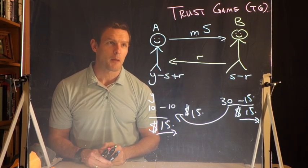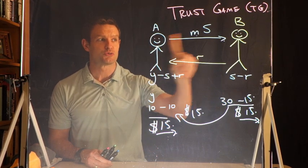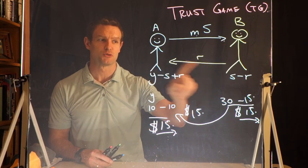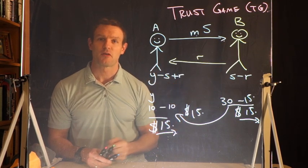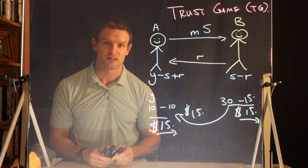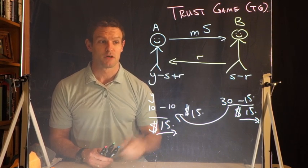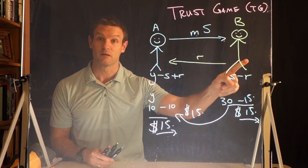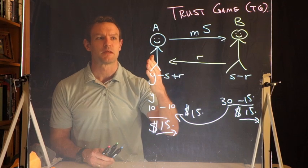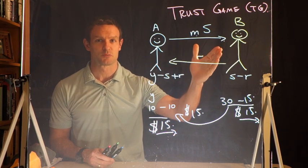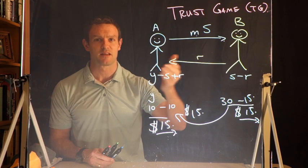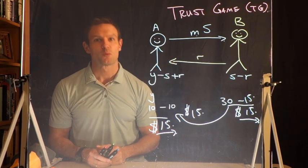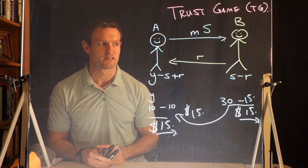Many people in position A send a significant proportion to player B, and many in position B send back to player A. But there's great variety in behavior. Some people behave self-interestedly in either position. On the other hand, some in position A send significant amounts to B, and B often reciprocates, or sometimes keeps all the money. We see a variety of behaviors in these experiments.